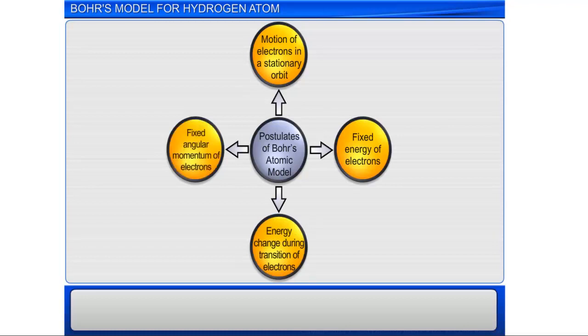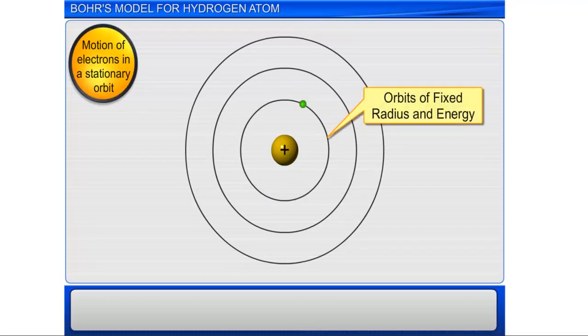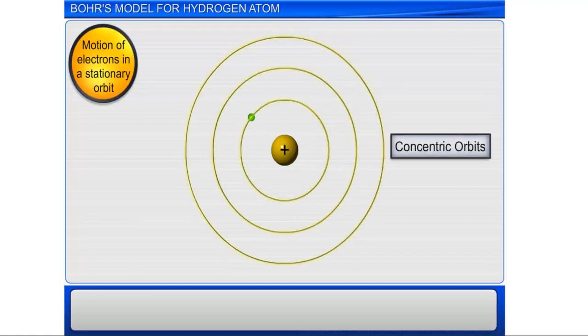The first postulate states that the electron in the hydrogen atom can move around the nucleus in circular paths of fixed radius and energy called orbits. Orbits are arranged concentrically around the nucleus and are also called stationary states or allowed energy states.